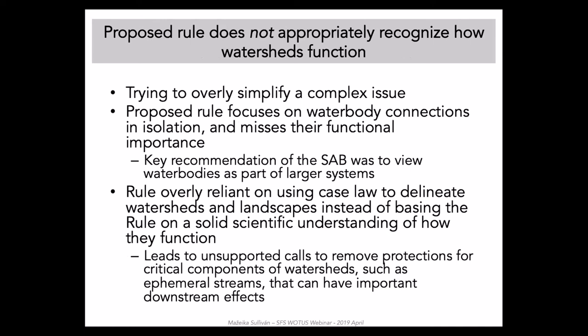In essence, the agencies propose to establish hard jurisdictional lines going against established and growing scientific evidence that connectivity occurs along a gradient. The SAB clearly articulated the importance of recognizing gradients of water body connectivity, and this concept has been further supported in recent scientific literature. It is critical to recognize that even low or infrequent connectivity can be important to downstream waters. In fact, the relative isolation of some wetlands provides a critical function in that they trap pollutants and nutrients and prevent them from entering downstream waters.